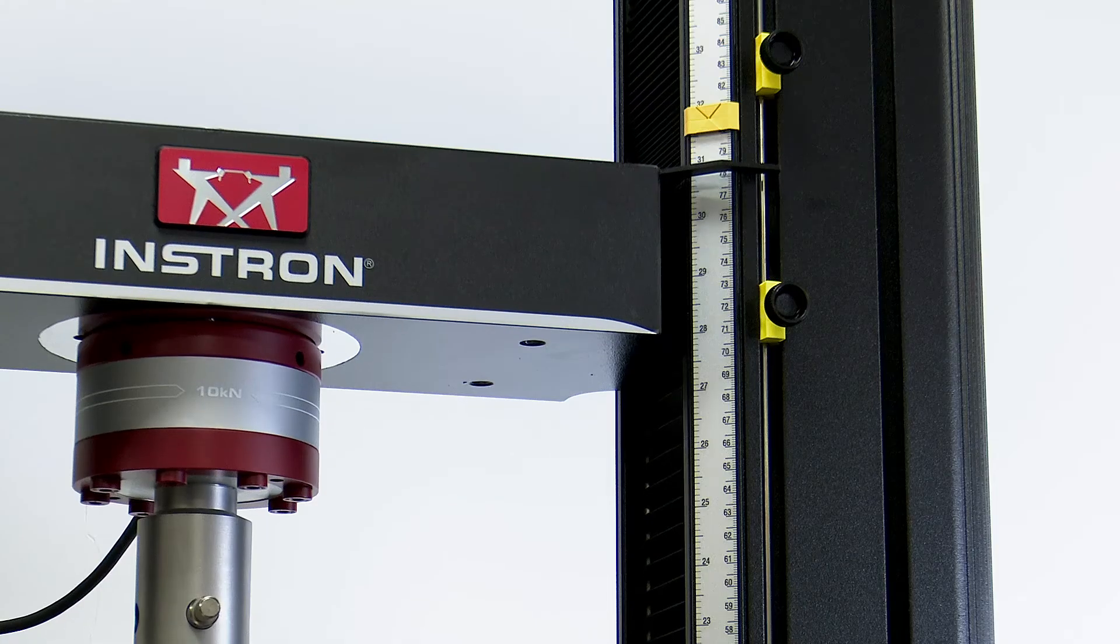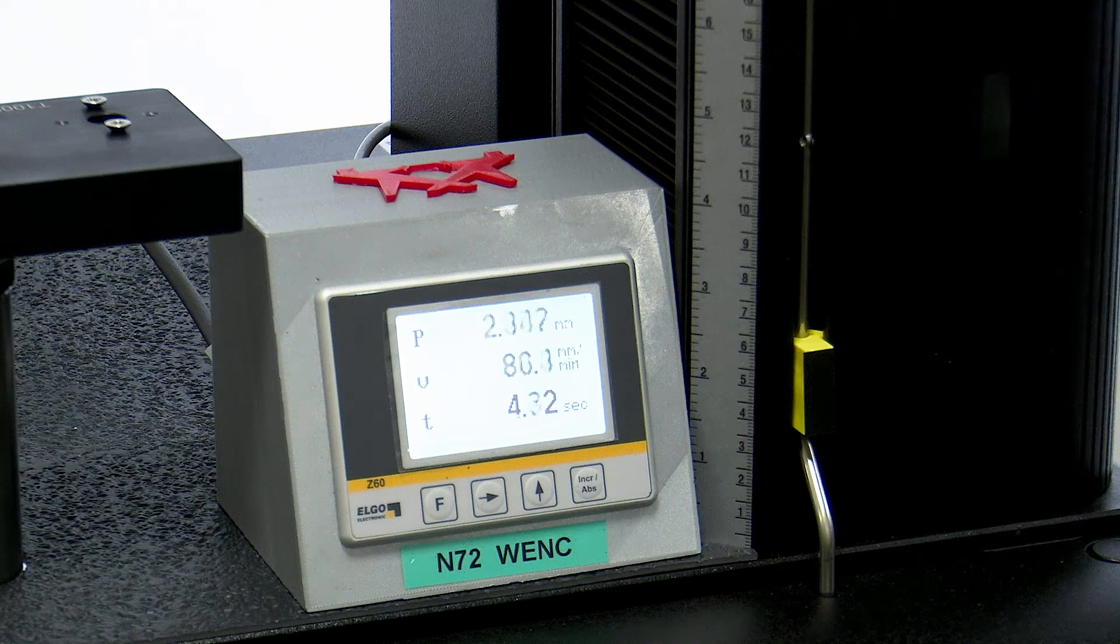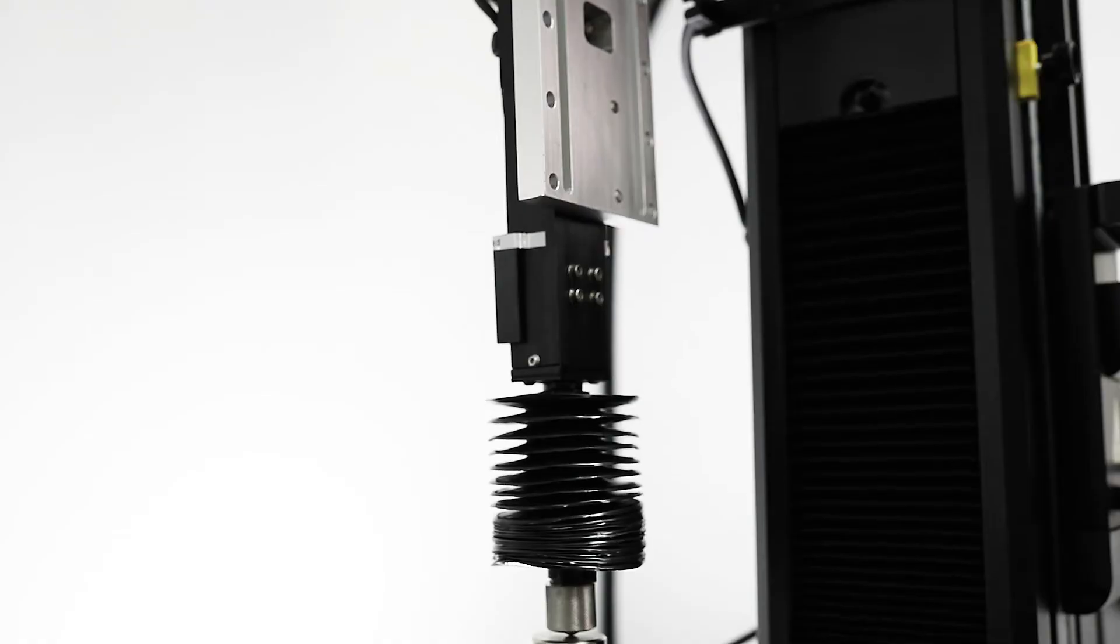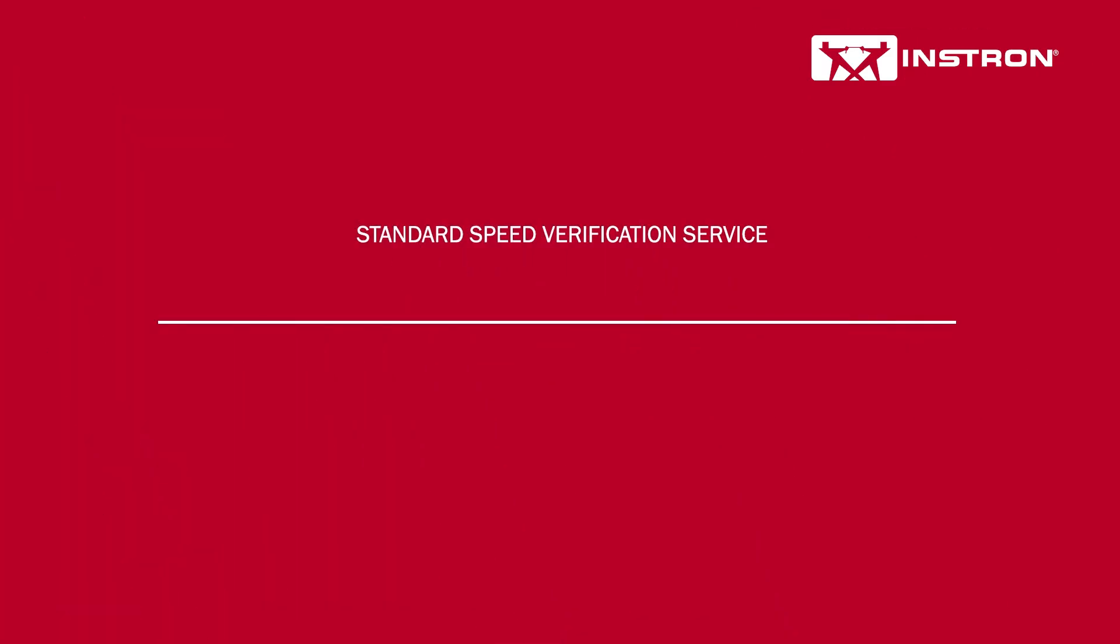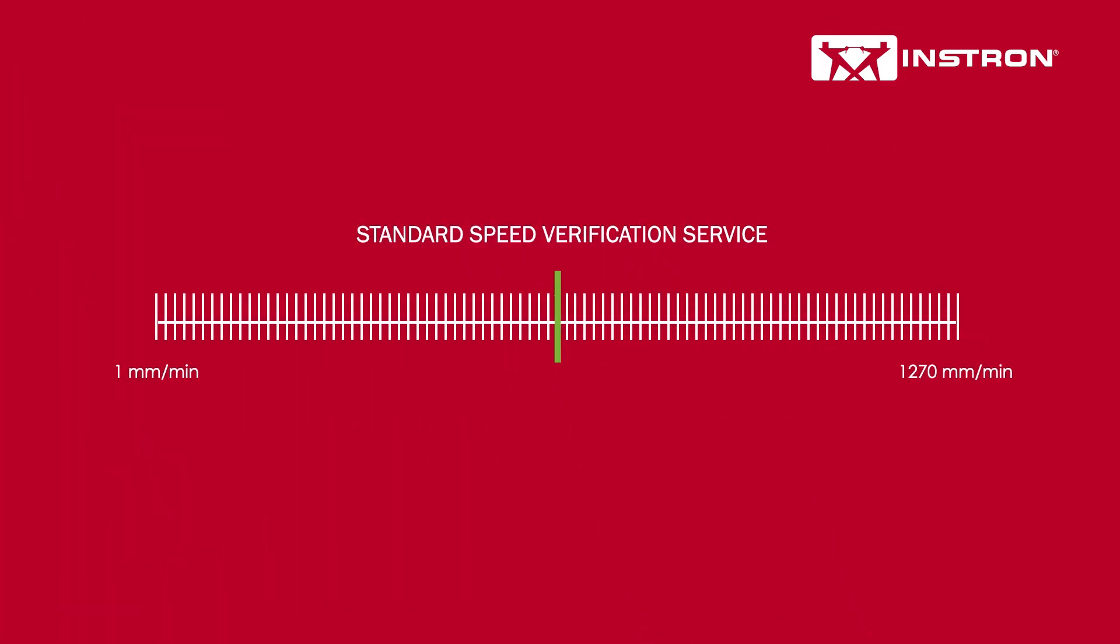With the highest quality equipment and new technologies including our wired encoder, Instron's standard calibration service can provide verification of speeds ranging from 1 millimeter per minute or 0.04 inches per minute up to 1,270 millimeters per minute or 50 inches per minute.